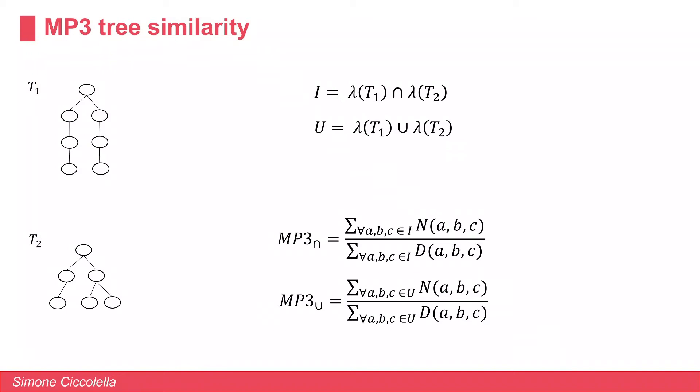The two sets of labels on the trees may not be equal, so we define two alternatives of the MP3 measure: MP3-intersection, where computation is done on the intersection of labels between the two trees, and MP3-union, where computation is done over the union of the label sets of the two trees.